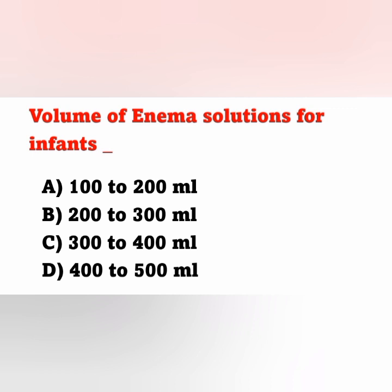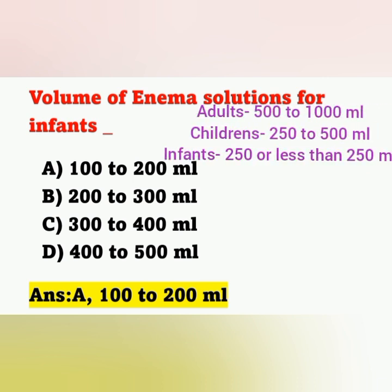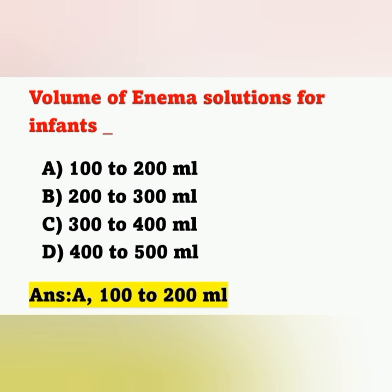Next question: volume of enema solutions for infants. Option A: 100 to 200 ml. Option B: 200 to 300 ml. Option C: 300 to 400 ml. Option D: 400 to 500 ml. The correct answer is Option A, 100 to 200 ml. The amount of enema solution for infants is 250 ml or less. For adults it is 500 to 1000 ml, and for children 250 to 500 ml.